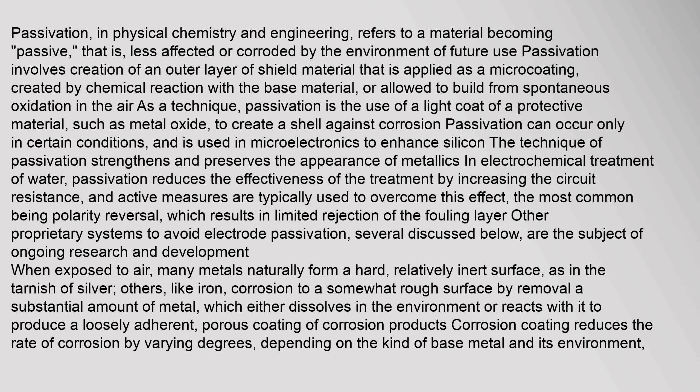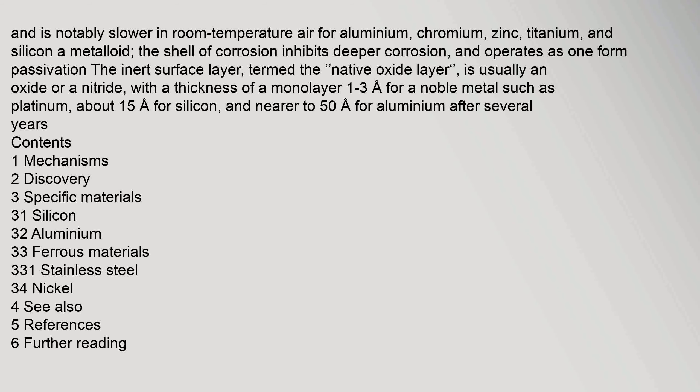When exposed to air, many metals naturally form a hard, relatively inert surface, as in the tarnish of silver. Others, like iron, corrode to a somewhat rough surface by removal of a substantial amount of metal, which either dissolves in the environment or reacts with it to produce a loosely adherent, porous coating of corrosion products.